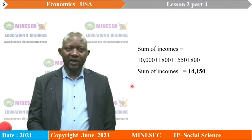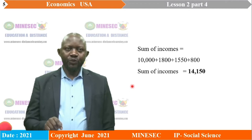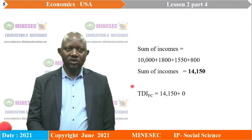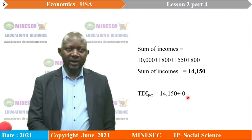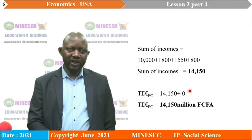Our total domestic income at factor cost is the sum of incomes plus imputed charge for the consumption of non-trading capital. Since imputed charge for non-trading capital was not given on the table, our total domestic income at factor cost is $14,150 million francs.